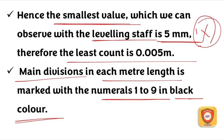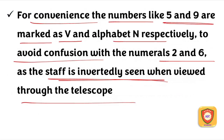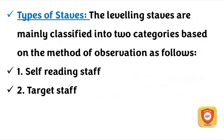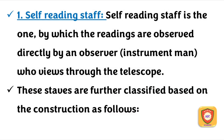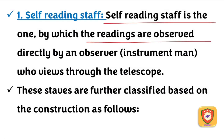The leveling staff is divided into two types: the self-reading staff and the target staff. In the self-reading staff, the observer looks through the telescope and reads the graduation directly.